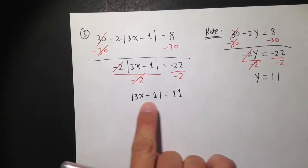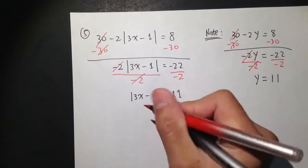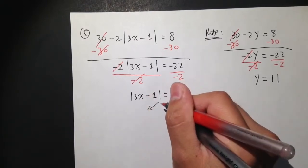Once we have the absolute value by itself like this, absolute value equal to a positive number, then we can split this into two different equations.